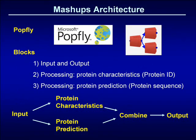Mashups can be developed in a number of publicly accessible frameworks. The mashups discussed in this presentation were developed in Microsoft PopFly. PopFly allows the sharing and reuse of units known as blocks which perform a specific task. These blocks are linked together to form a mashup. The blocks developed for protein analysis include blocks for allowing user input, blocks for displaying the mashup results, and processing blocks to perform the type of protein analysis required.